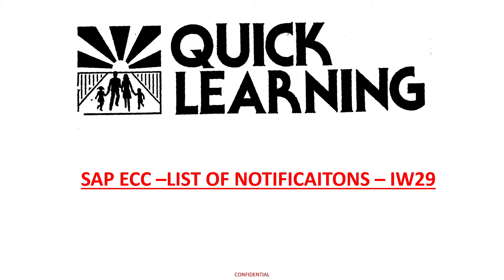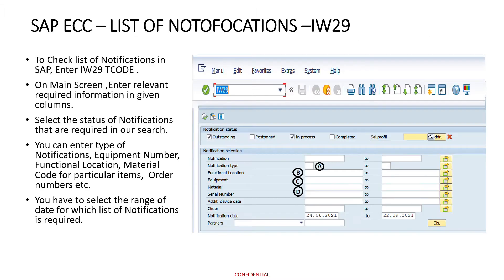Welcome to Quick Learning. Today we are going to learn how to get the list of notifications in SAP using the IW29 command. We have to enter IW29 on the main page, then the screen appears.